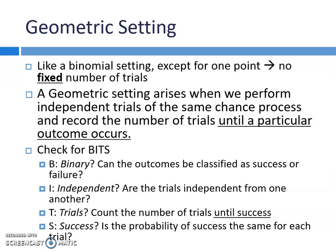In our last videos, we were talking about binomial probability distributions. The last section of chapter 6, section 6.3, is going to be all about geometric random variables and geometric probability distributions. Like a binomial setting, very similar to it, except for one key point: there is no fixed number of trials.